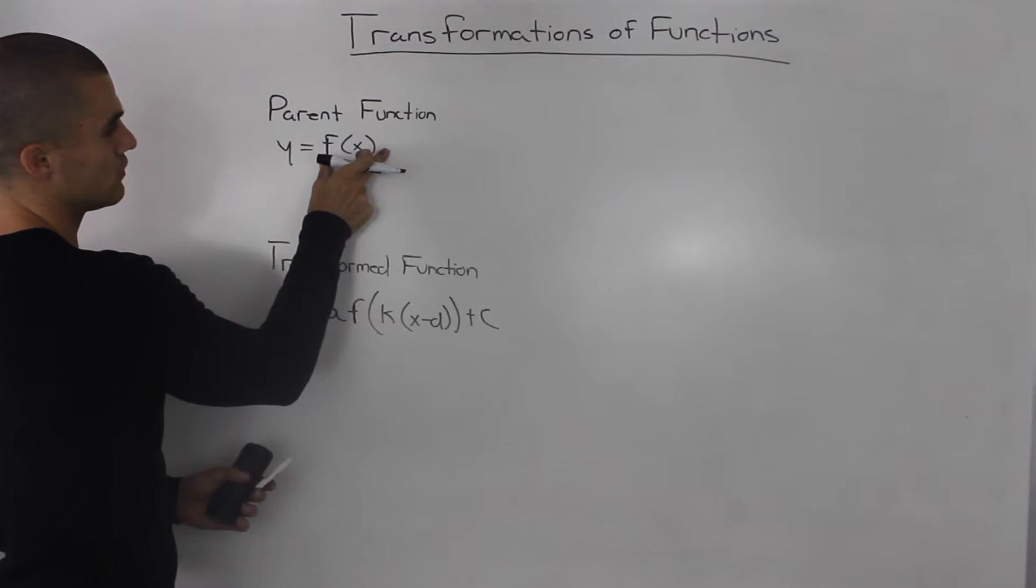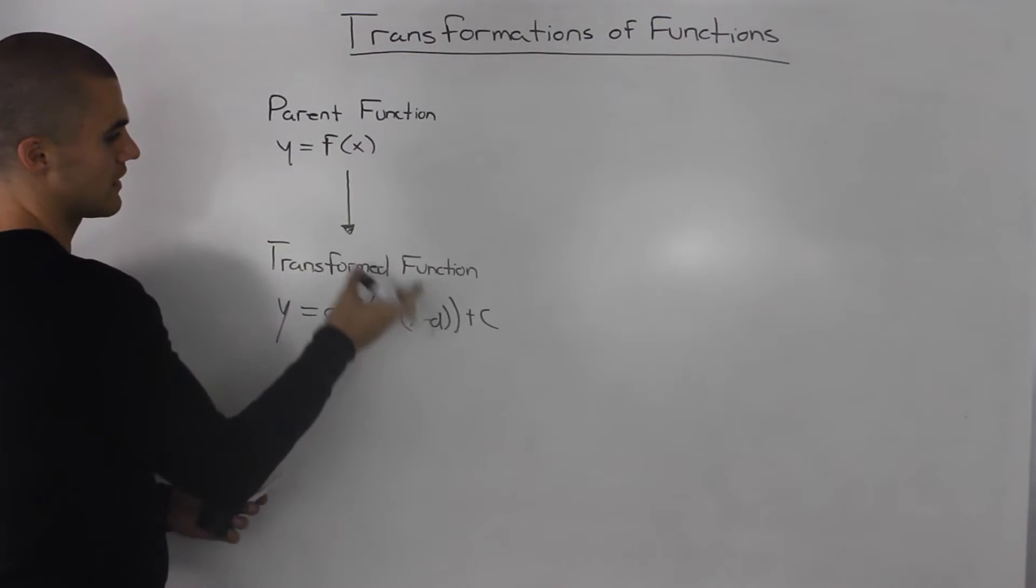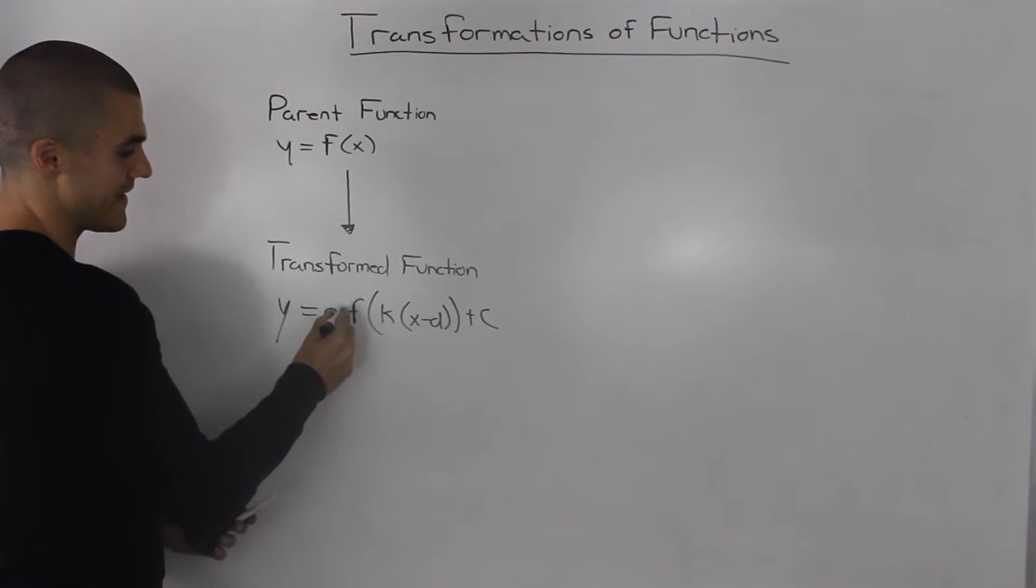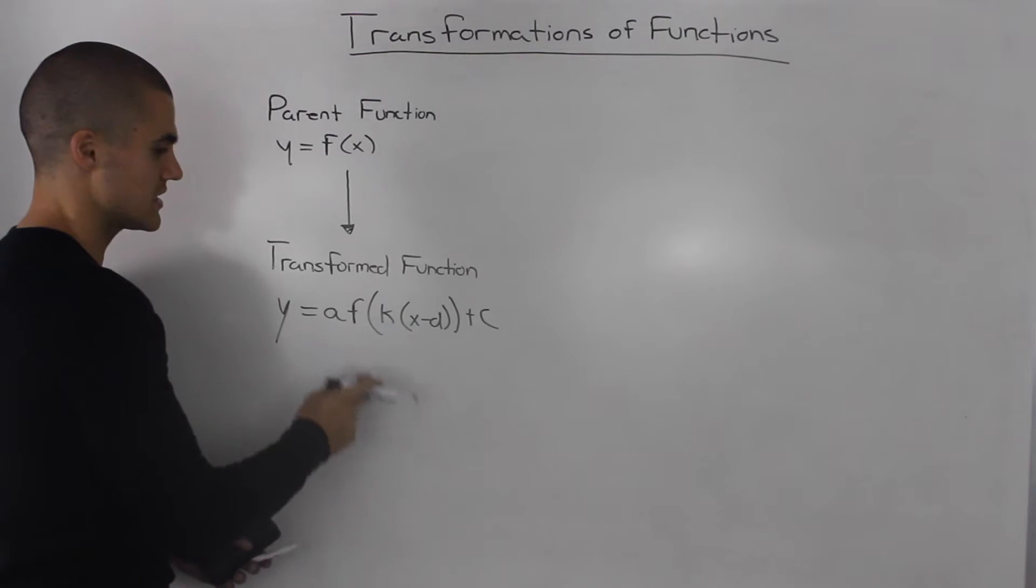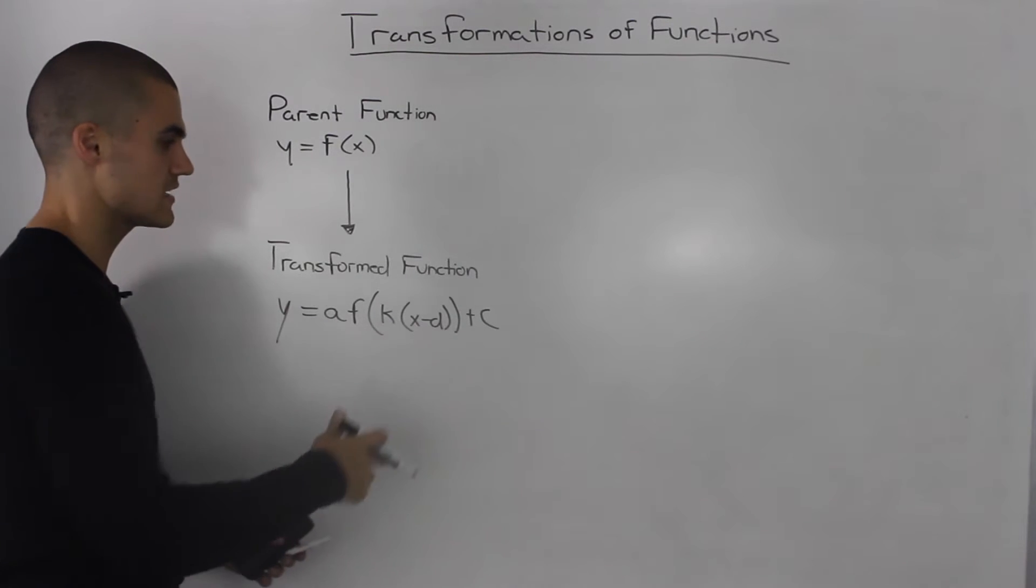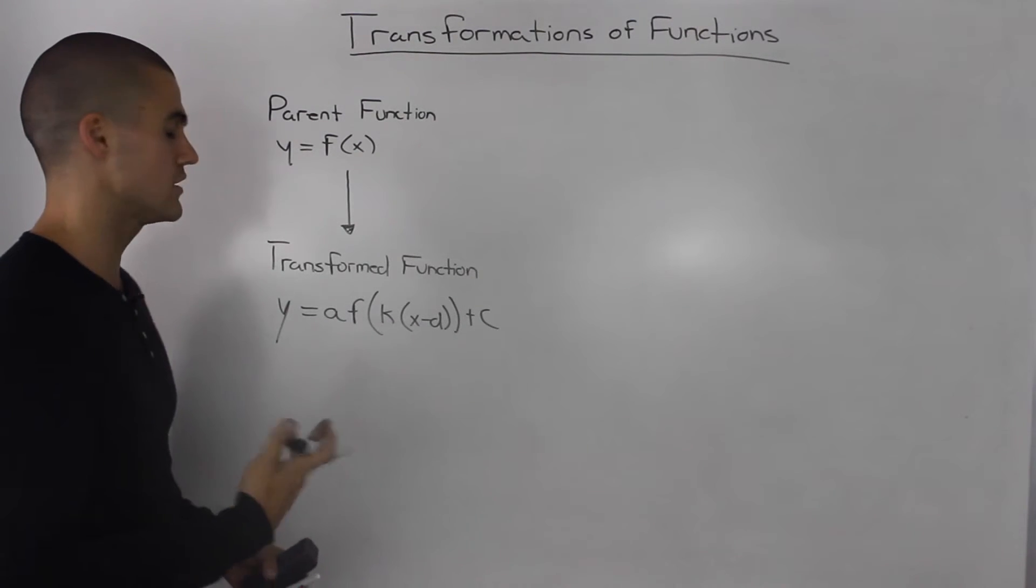So let's say we have a general parent function f of x, then if we transform it, it would take the form a·f(k(x-d))+c, where a, k, d, and c are just any kind of number.